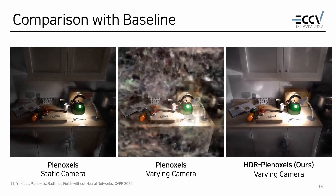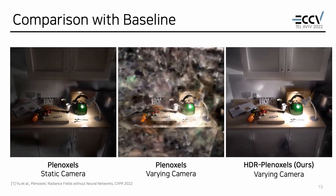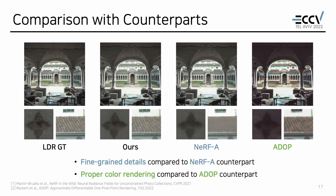Now let's explain the experimental results. Our method mitigates the limitation of the baseline with varying camera-conditioned images that could not be solved before. With over- or under-saturated points, image features like color and shape cannot be verified. However, our HDR Planocels can restore these saturated regions and show comparable reconstruction results compared to HDR ground truths. Our method also shows fine-grained details compared to NERF-A and proper color rendering compared to ADOP counterparts.